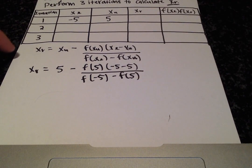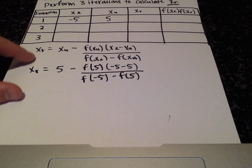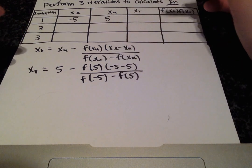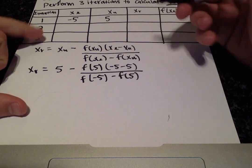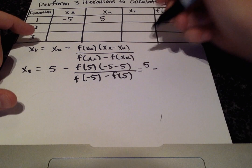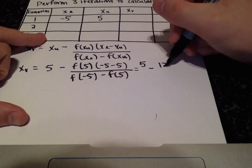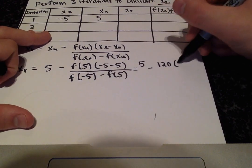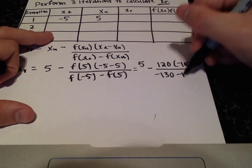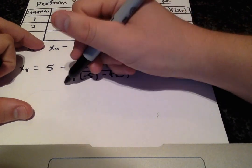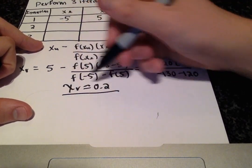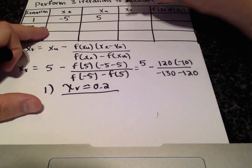We simply plug in the appropriate values into the function x cubed minus 5, and we get 5 minus 120 times negative 10 over negative 130 minus 20, giving us an x-r value of 0.2 for our first iteration.